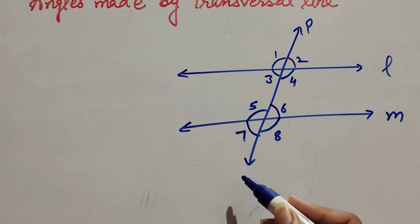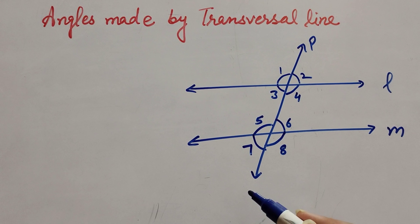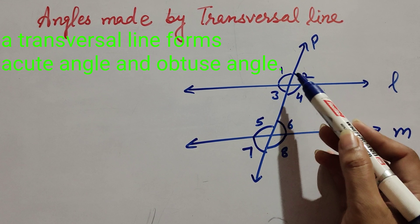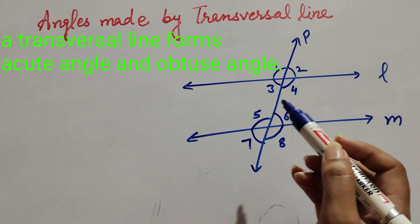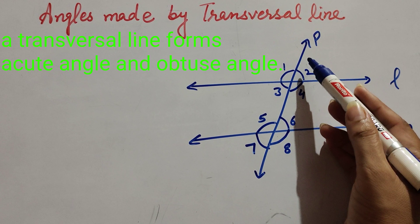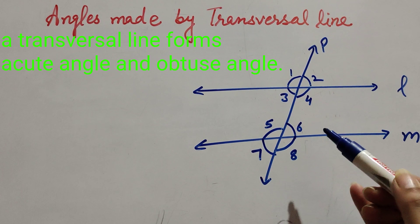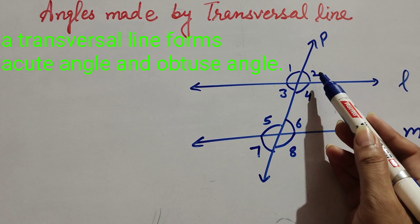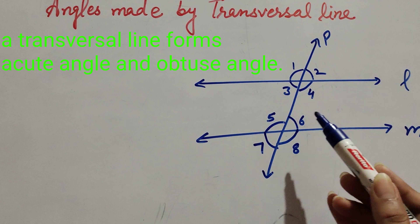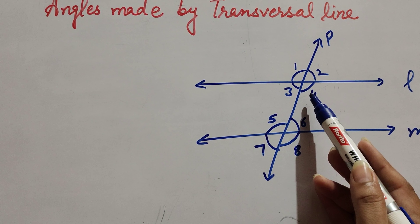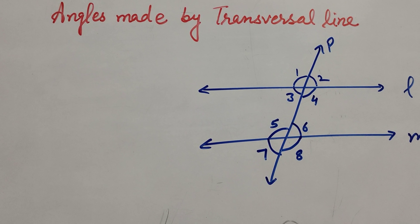This intersecting line p is called a transversal line. When this line intersects, it forms two types of angles: acute angle and obtuse angle. In this figure, angle 2 is an acute angle, angle 4 is an obtuse angle, and angle 3 is an acute angle.